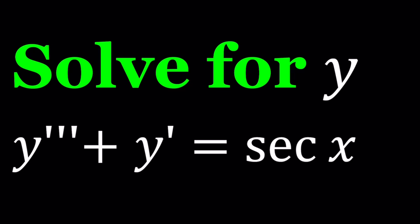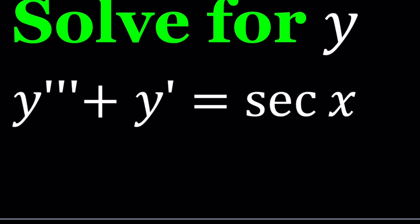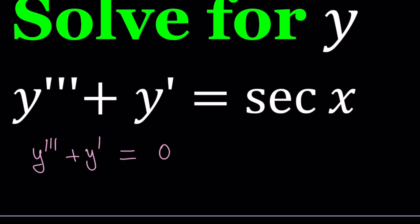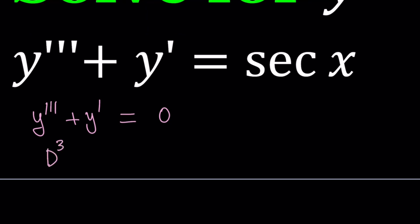To solve this problem, first we're going to look at the homogeneous case. The homogeneous equation is basically when we set the right-hand side equal to zero. We're going to find a homogeneous solution y sub h, and then a particular solution — any solution that works for the general equation — and put those together to get the general solution. We can turn this into a differential operator with the third derivative represented by D cubed and the first derivative by D, applied to y.